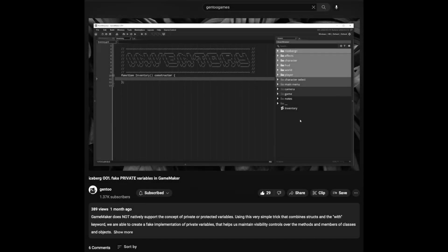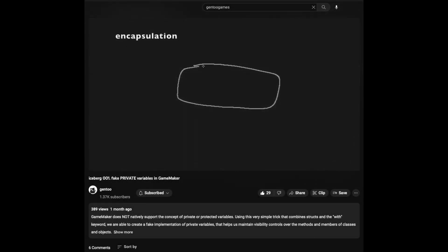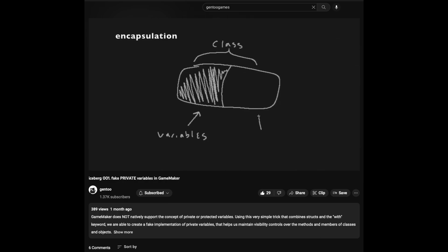In the very first episode of the Iceberg series, I introduced the concept of private variables inside of GameMaker. I want to expand on this topic by showing an implementation of private methods. For the most part, this implementation is very similar, but there is one trick I want to showcase that will make your workflow much easier. So if you haven't seen the first episode on how to implement private variables, I recommend you check that video out first.